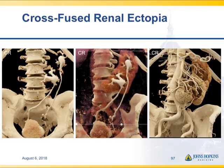With variations in the calyces and collecting system, here's an example of cross-fused renal ectopia — very nicely seen. Two kidneys literally fused, the collecting system times two, the ureters times two. Just a very nice example of that anatomical variant.